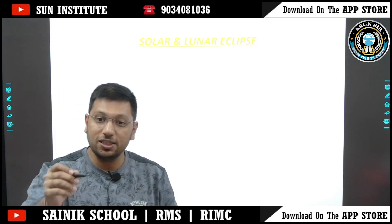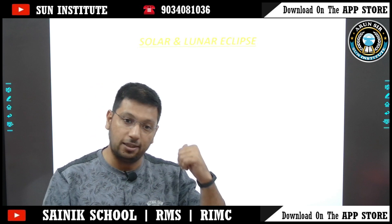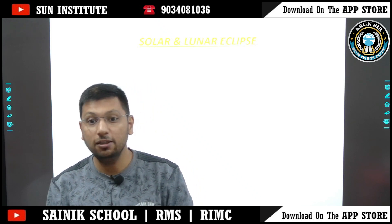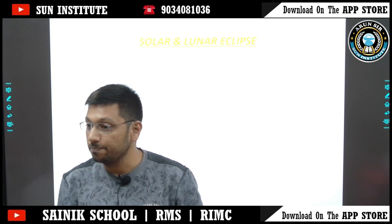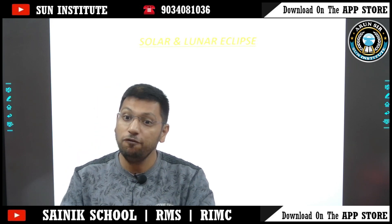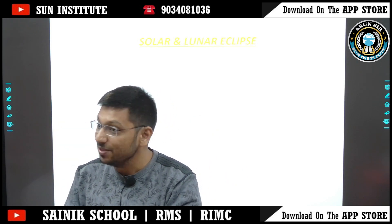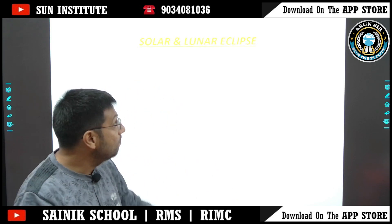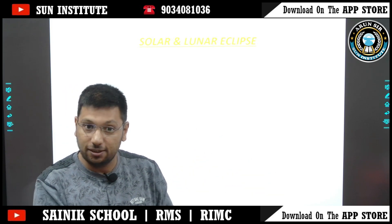So, solar and lunar eclipse. Before that, what is the meaning of eclipse? In the English dictionary, eclipse means that someone has covered something — another meaning is that someone has blocked the light. Like sometimes when we watch a TV program with 2-3 actors, we say everyone did good acting. But actor A performed so well that he eclipsed the good performance of all other actors — he blocked it. So this is the meaning of eclipse, and that is why these phenomena are known as solar and lunar eclipse, because in these, the light gets blocked.